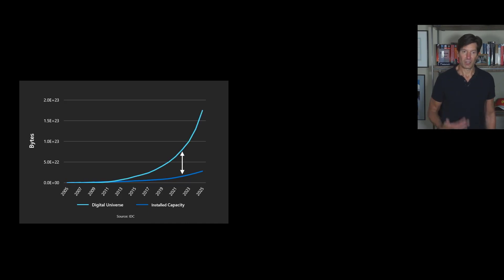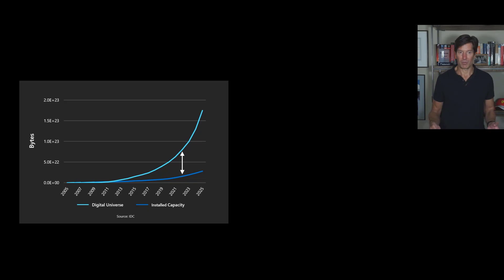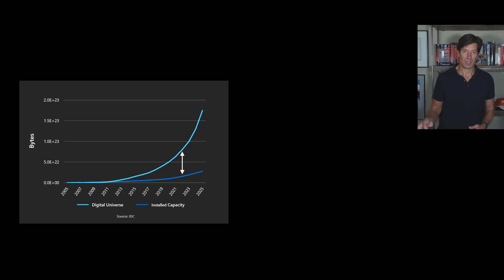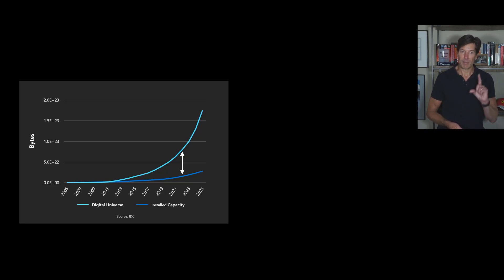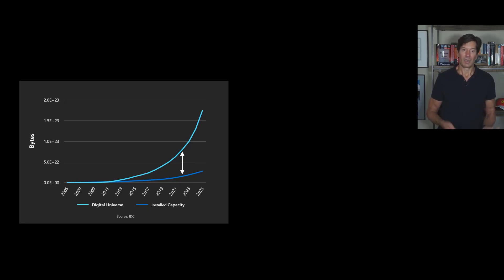This data is from IDC. The digital universe — meaning all the data that's consumed, not necessarily all stored, but all of the data: log files, temporary files, intermediate files, and data generated in transmission from one place to another — vastly exceeds the storage capacity that we're putting online. Not all of that needs to be stored, but you can see the gap continues to widen, meaning there are some types of data that we simply won't be able to efficiently store with today's technologies.